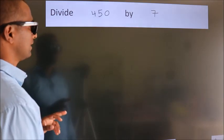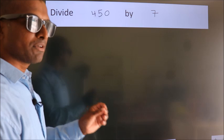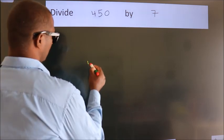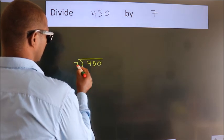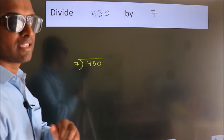Divide 450 by 7. To do this division, we should frame it in this way. 450 here, 7 here. This is your step 1. Next.